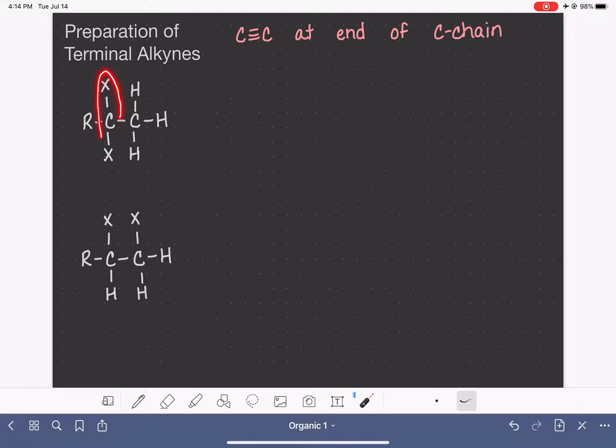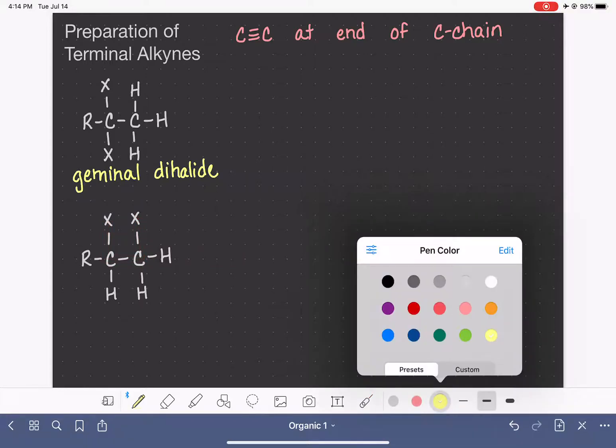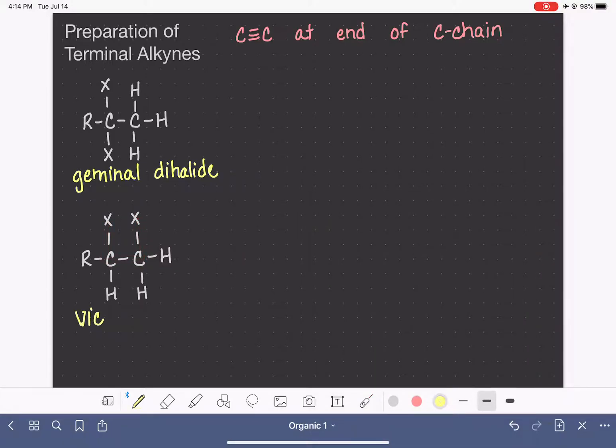When we have two halogens on the same carbon, this is called a geminal or gem dihalide. And then when the halogens are on adjacent carbons, we call that vicinal dihalide.